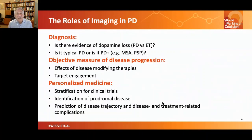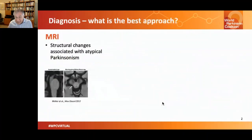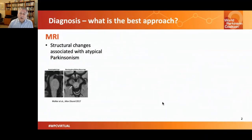The two main diagnostic issues are: first, is there a loss of dopamine neurons, such as Parkinson's versus essential tremor? Or perhaps more importantly, is it Parkinson's or is it a related condition — one of the so-called Parkinson's plus or atypical forms of Parkinson's?